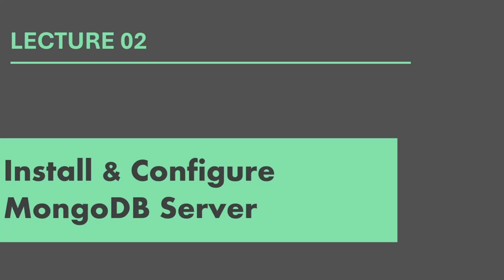In this lecture, I am going to show you how to install MongoDB server on Windows operating system. I'll also show you how to configure MongoDB server to run in background and in foreground. If you are using Mac OS or Linux, the installation steps might be a little bit different, but I'll share a link in the description of this video which you can follow to install MongoDB on Mac OS or Linux.